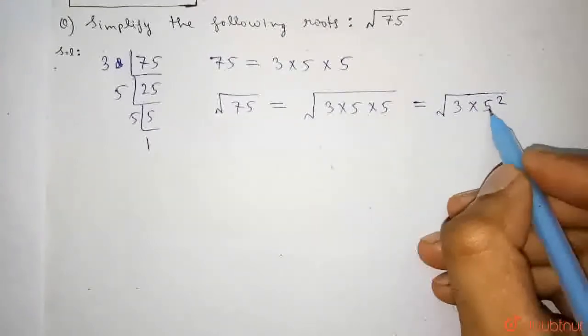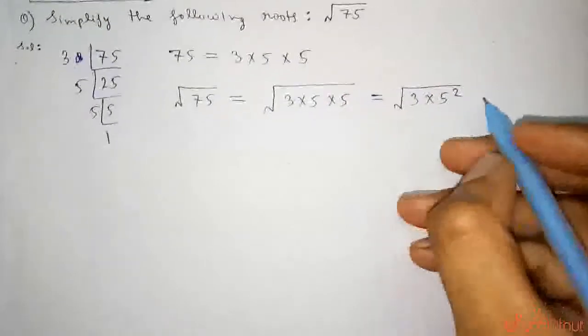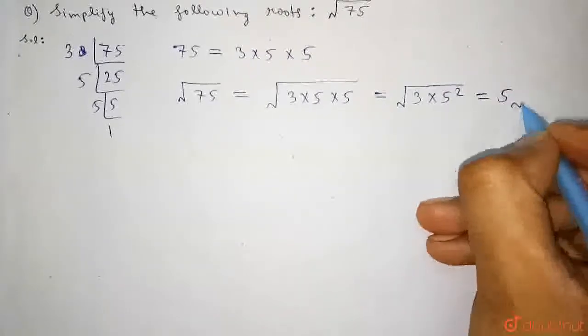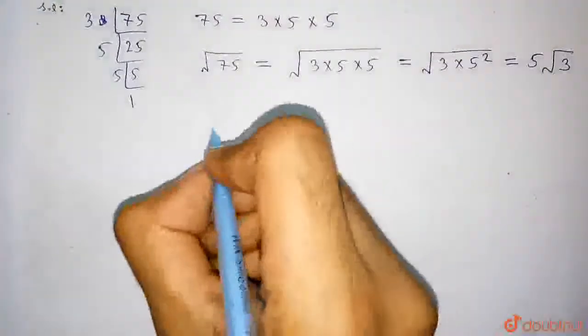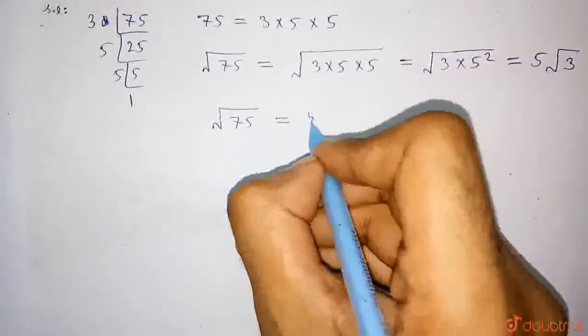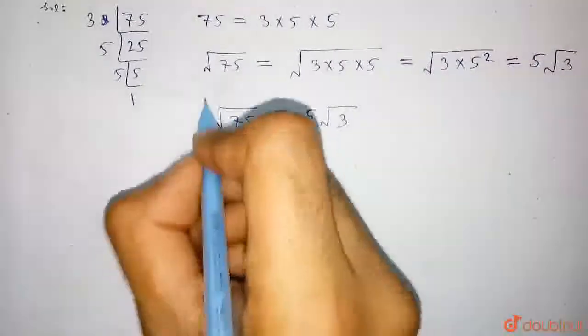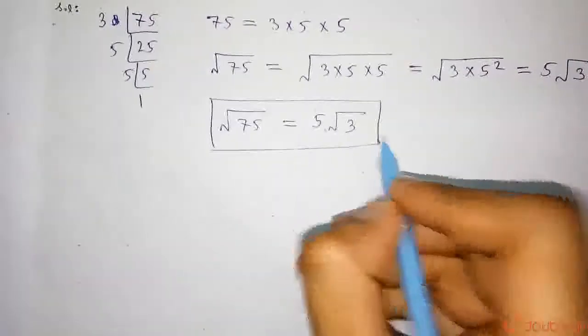Or this square, as this is 5 square, so this square will come outside. So, we can write it as 5 root 3. So, root over 75, we can write it as 5 root 3 which is the correct answer.